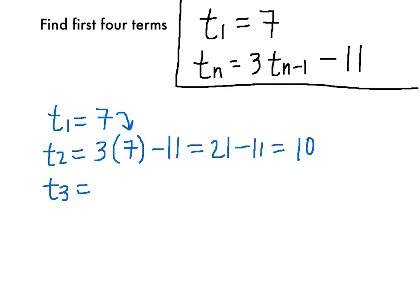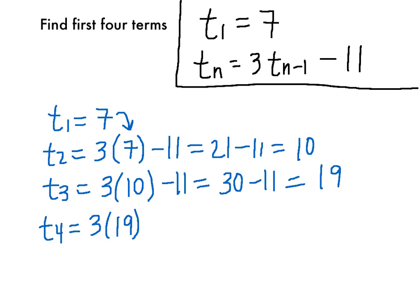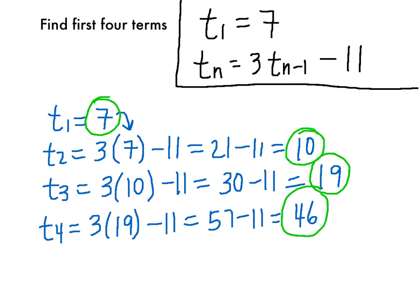For t₃, we need to take 3 times the previous term, which in this case is t₂, which we found to be 10. Subtract 11 from that. So that's 30 minus 11, so our t₃ is 19. And then our t₄, we need to do 3 times 19 and subtract 11. So there we have 57 minus 11. Our fourth term is 46. So again, we were asked for the first four terms. t₁ is 7, t₂ is 10, t₃ is 19, and t₄ is 46.